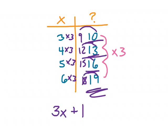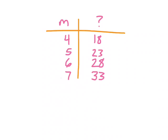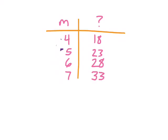To sum that up: look for those patterns, follow them through, then adjust accordingly. Here we've got the value m, and it goes four, five, six, seven — again a plus-one increase each time, a nice consistent jump that makes it easier to find patterns. On the output side, we're seeing eighteen, twenty-three, twenty-eight, thirty-three — also a really consistent increase of five each time.